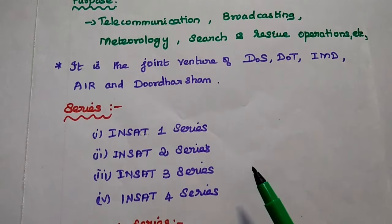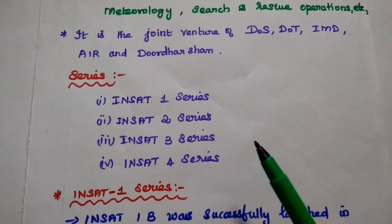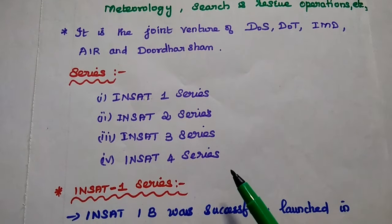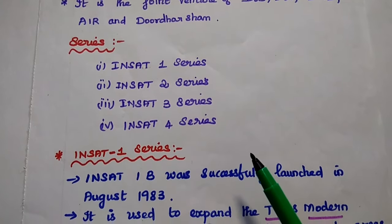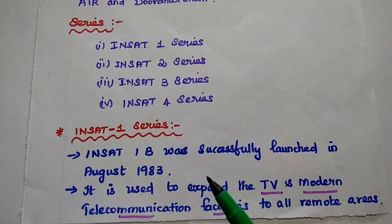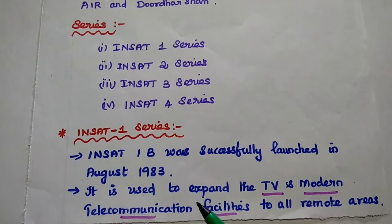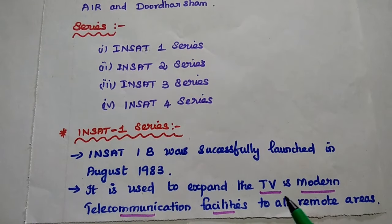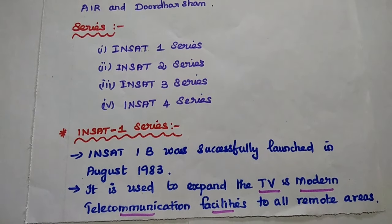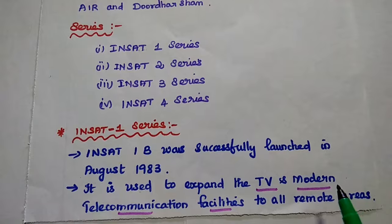There are different series available in the Indian National Satellite System: INSAT-1, INSAT-2, INSAT-3, and INSAT-4. The first one is the INSAT-1 series. INSAT-1B was successfully launched in August 1983. It is mainly used to expand TV and modern telecommunication facilities to all remote areas over the Asia-Pacific region.